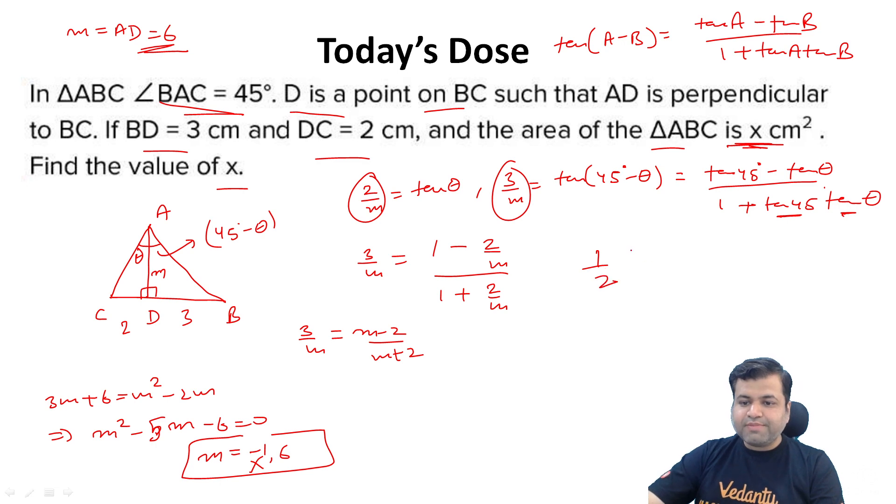What is the area? Area is half, base is 3 plus 2, height is m. This is coming out to be 15. So 15 will be the perfect answer, this question's answer is 15.